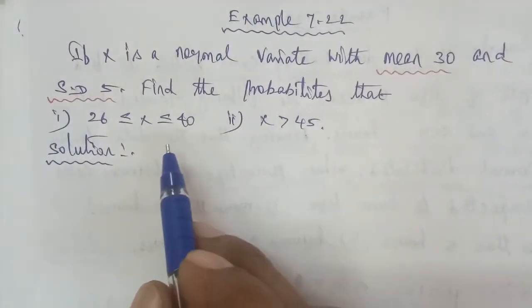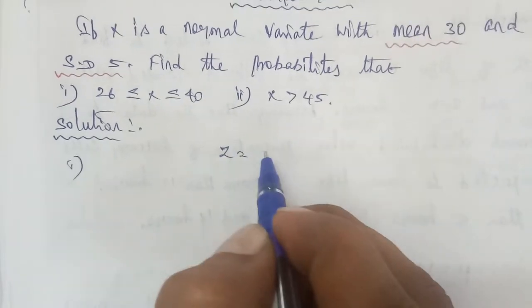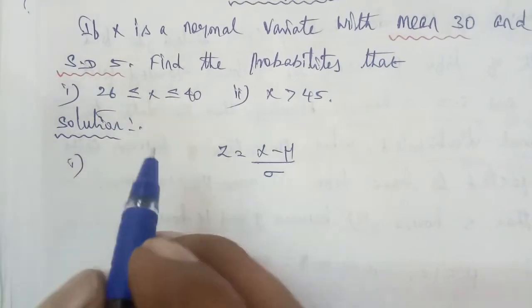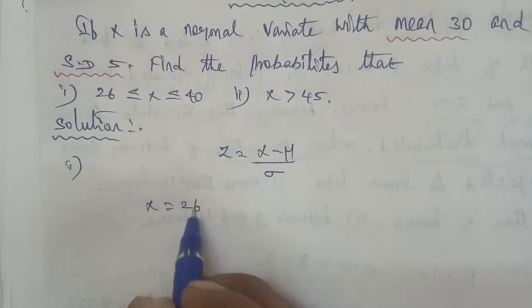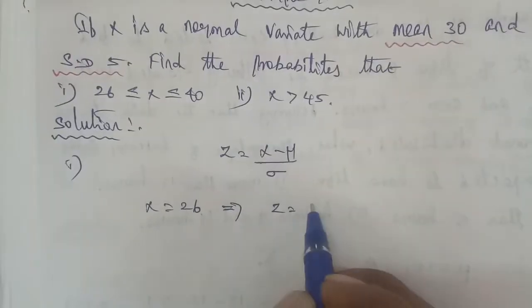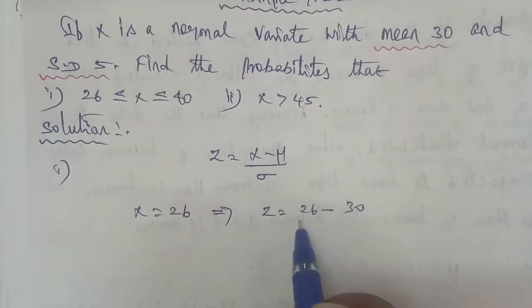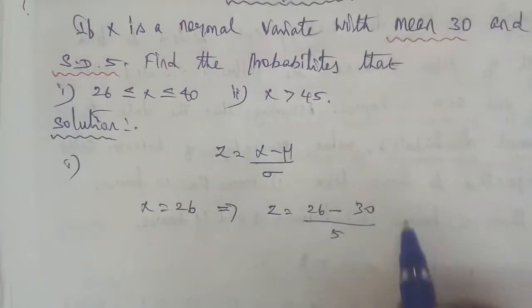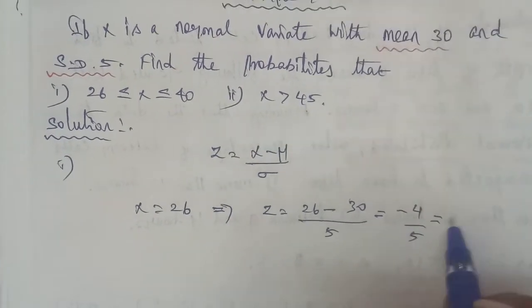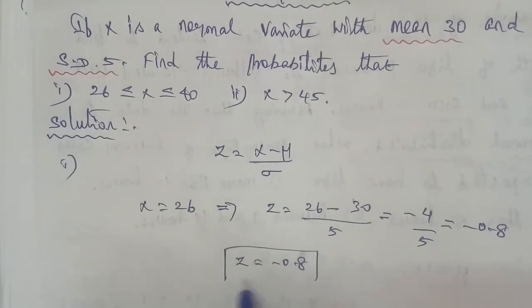For sub-problem 1, the formula is Z = (X - mu) / sigma. For sub-problem 1: P(26 ≤ X ≤ 40). When X is equal to 26, Z is equal to 26 minus the mean value, that is 30, divided by the sigma value, standard deviation 5. So 26 minus 30 is minus 4 divided by 5, that is minus 0.80. Therefore Z is equal to minus 0.80.